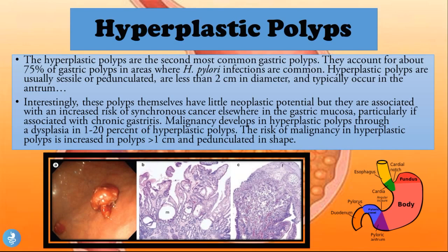The hyperplastic polyps are the second most common gastric polyp and account for about 75% of gastric polyps in areas where H. pylori infections are common. They are usually sessile or pedunculated, less than two centimeters in diameter, and typically occur in the antrum — the pyloric antrum shown in purple on the diagram.